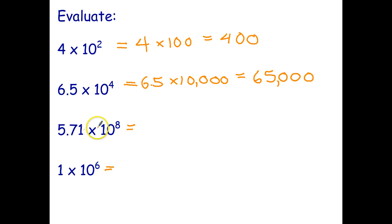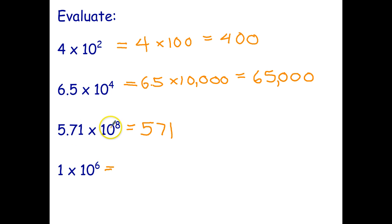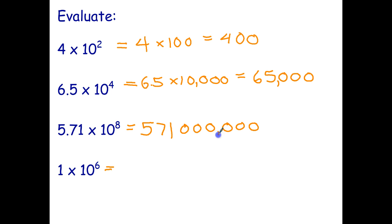Let's see how you went. So 5.71 times 10 to the eighth: I'm going to multiply that by 10 to the eighth, which means I've got to move the decimal point eight places to the right — one, two, three, four, five, six, seven, eight. Putting in commas to separate out the digits, that's 571 million.